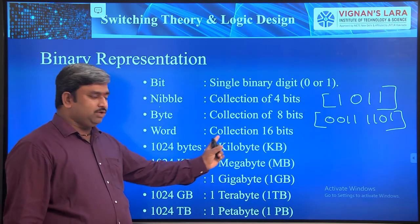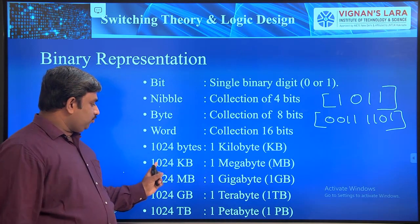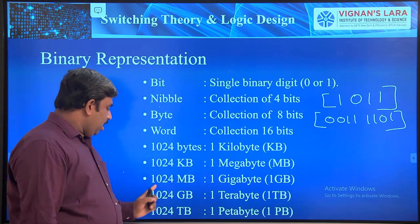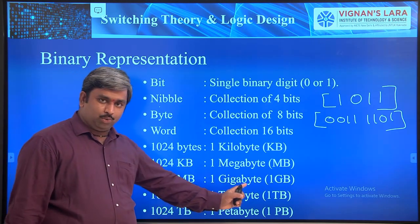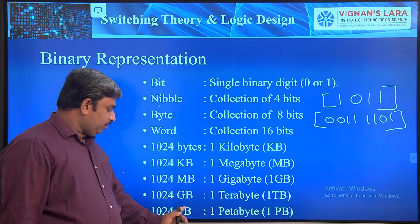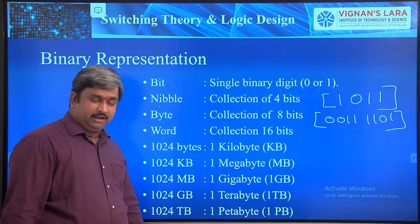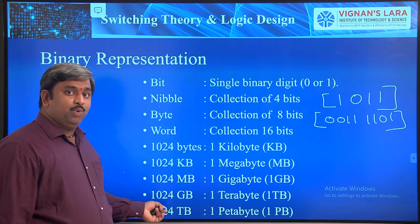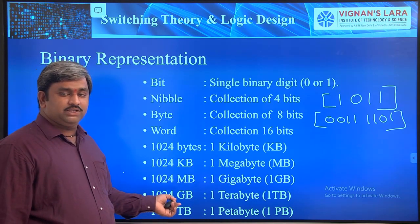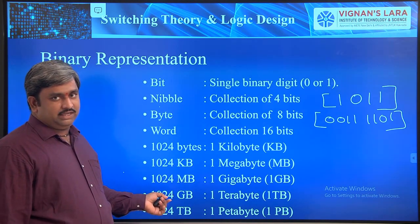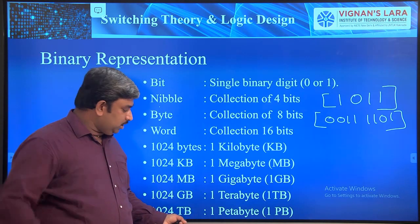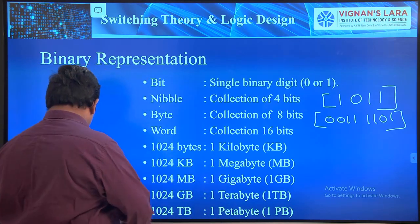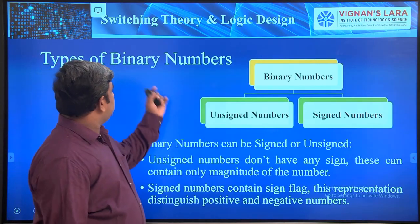1024 bytes equals 1 kilobyte. 1024 kilobytes equals 1 megabyte. 1024 megabytes equals 1 gigabyte. 1024 terabytes equals 1 petabyte. In our laptops we use hard disks of 1 TB, 2 TB, or 4 TB. Higher than terabyte we have petabytes — that is 1 PB.